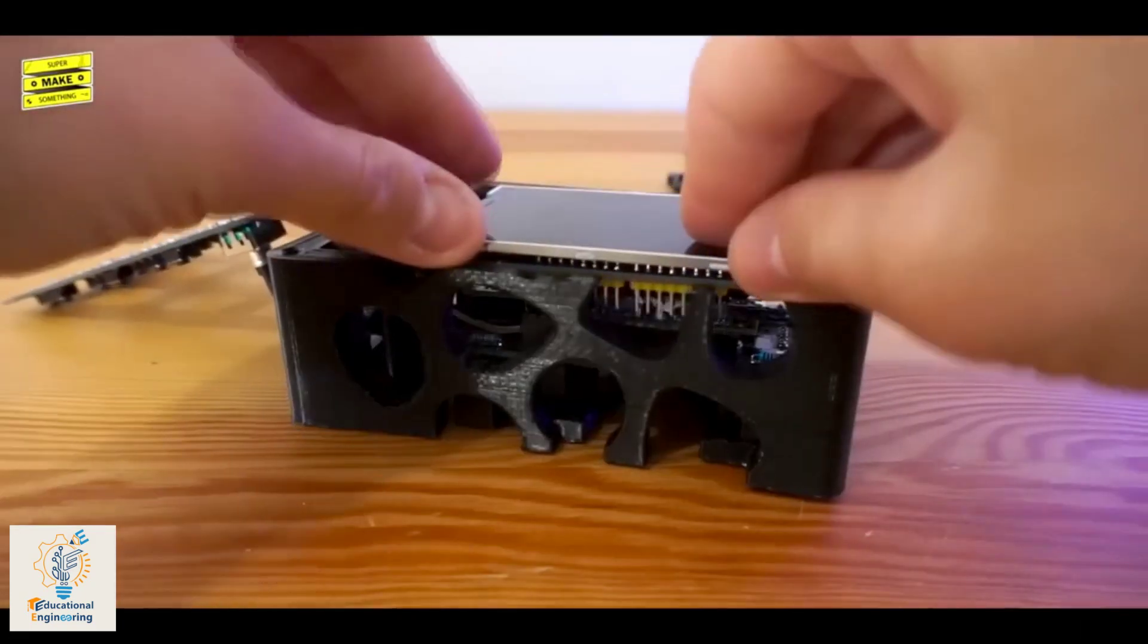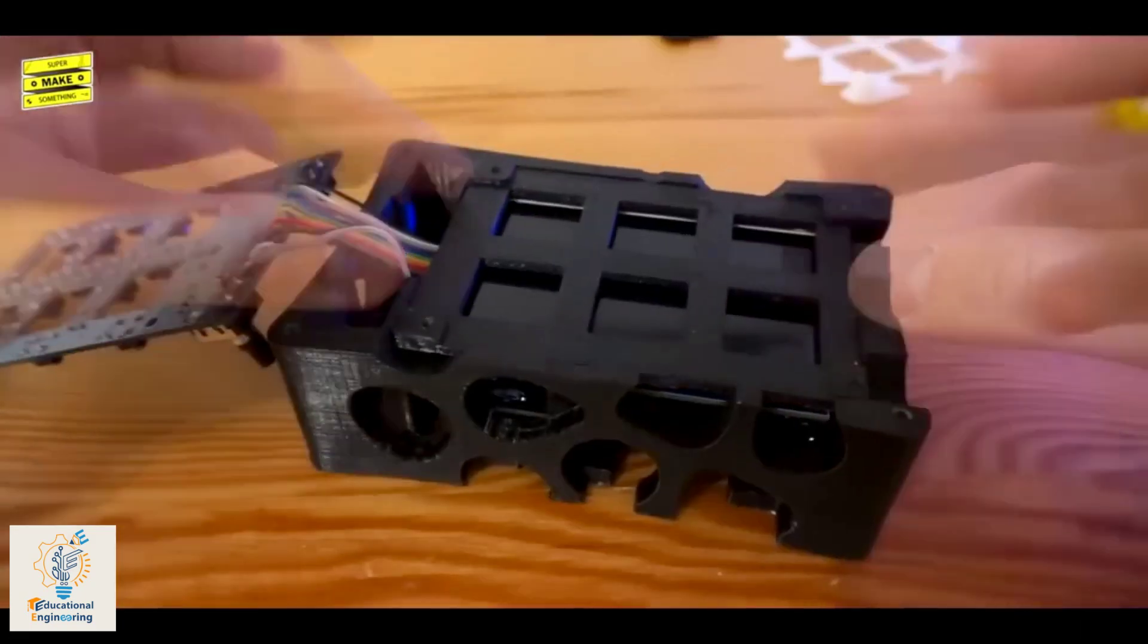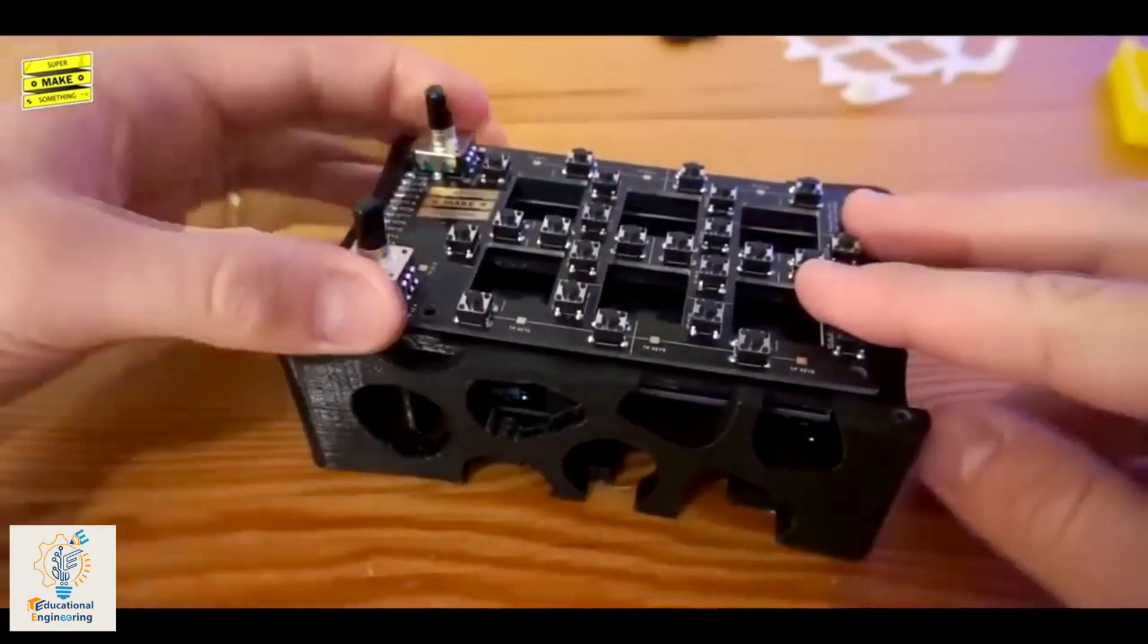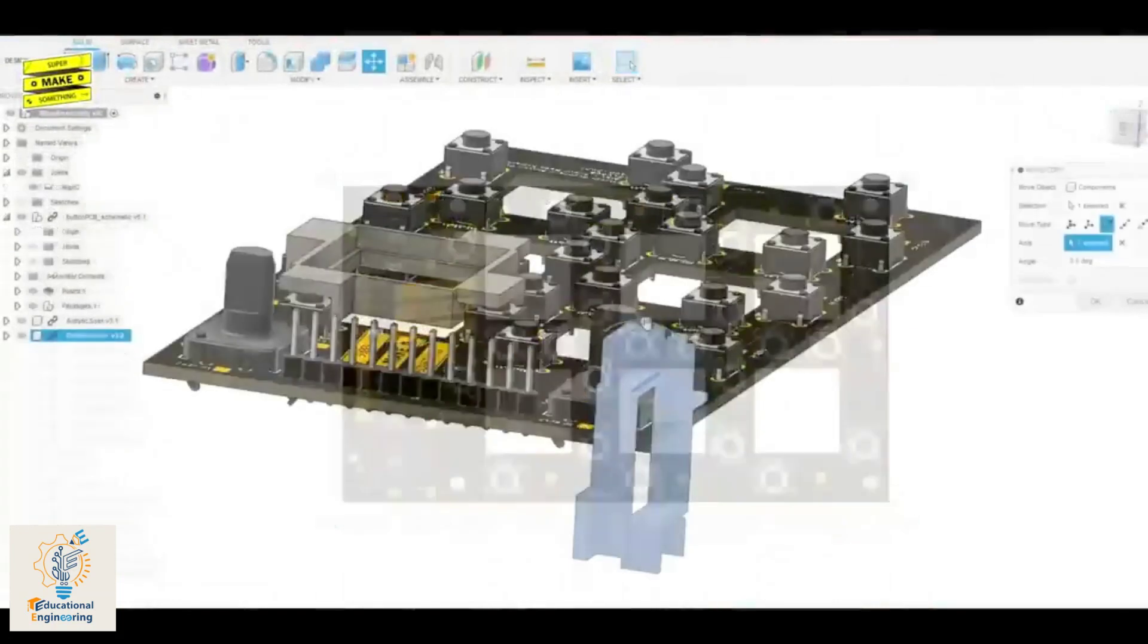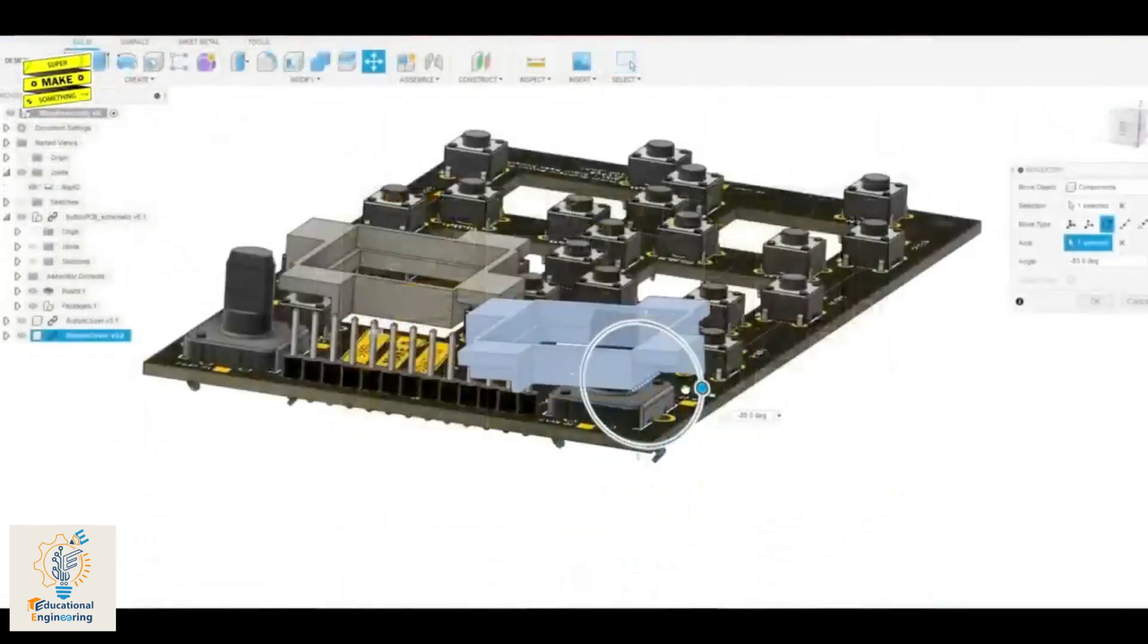The bottom layer PCB consists of the Arduino and the SD card reader. Above it lies an LCD screen and a spacer insert. The top layer PCB consists of all the button inputs.